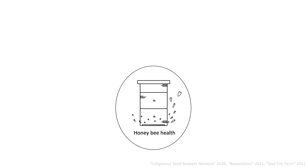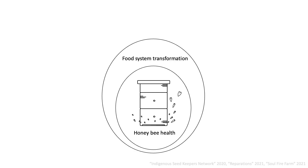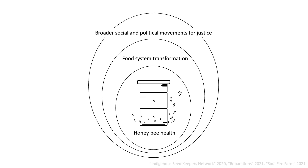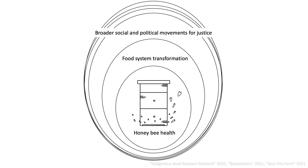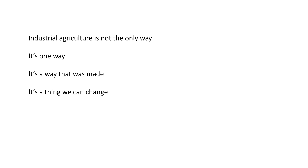Efforts to enact these alternatives are inherently interdisciplinary. They connect food systems transformation to broader social and political movements for justice, such as indigenous land and seed sovereignty initiatives, and efforts to eradicate racism from the food system. When honeybee researchers recognize industrial agriculture as the root cause of honeybee health issues, we open ourselves to the opportunity to collaborate meaningfully in these movements, and contribute to the future that must be built. We add our voices to the growing chorus that knows and insists that industrial agriculture is not the only way. It's one way. It's a way that was made. It's a thing we can change. The question is whether we open up and let that change happen through us, or dig in our heels until that change happens to us.